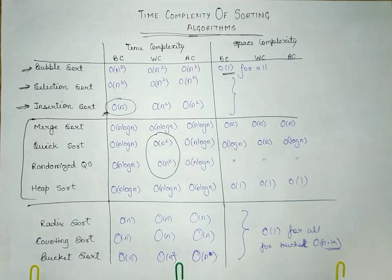The worst case is order of n square. This is when the array is already sorted or almost sorted. As I told you in previous videos, quick sort gives worst case when the array is almost sorted or already sorted, while insertion sort gives you the best case when the array is almost sorted.